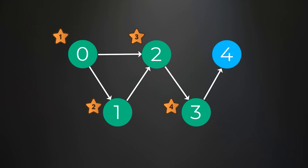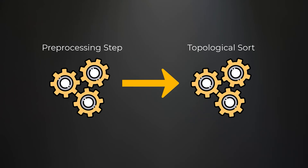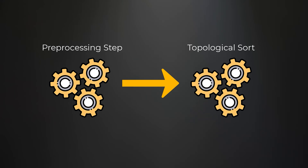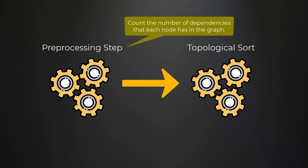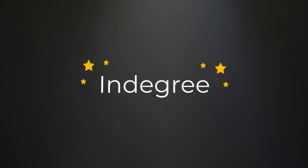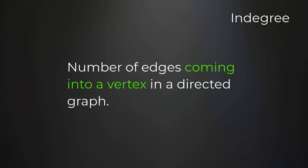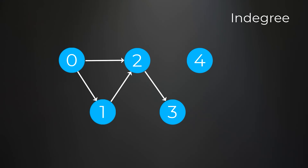The goal of any topological sort problem is to order the vertices of the graph. In order for Kahn's algorithm to be able to do this, there is some pre-processing of the data that must occur. This pre-processing involves counting the number of dependencies that each node has, and this is called an indegree. An indegree is the number of edges coming into a vertex in a directed graph, or in really simple terms, it is the number of arrows pointing to a node.